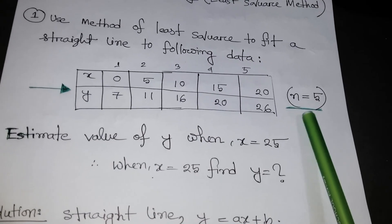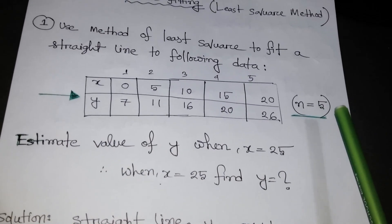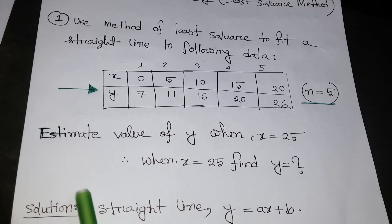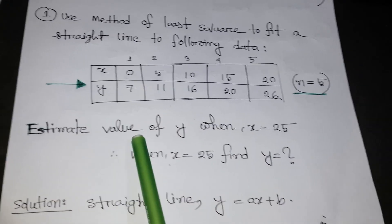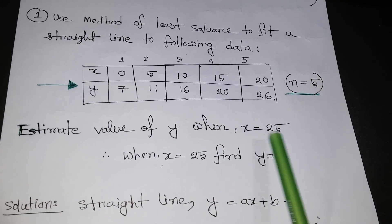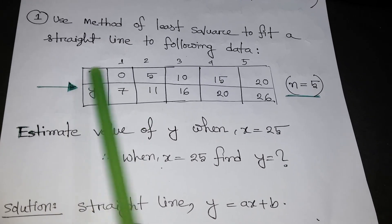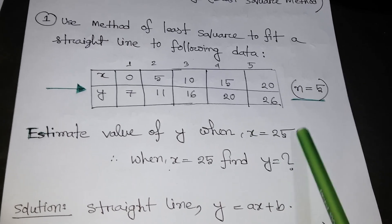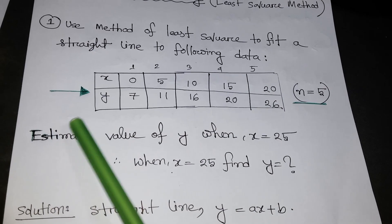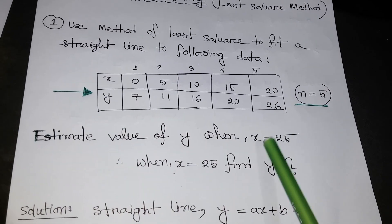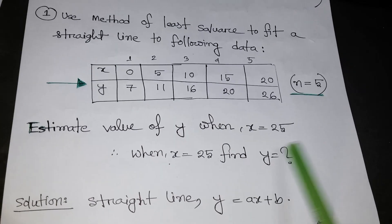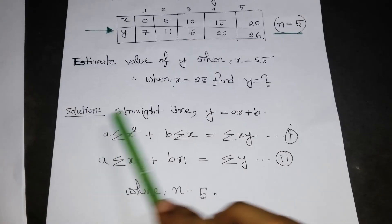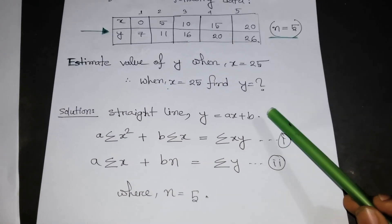So the n value is 5. Our ultimate question is: we need to find the estimated value of Y when X equals 25. In the given data, X goes up to 20, and we don't know the value of Y when X is 25 — that is what we need to find.